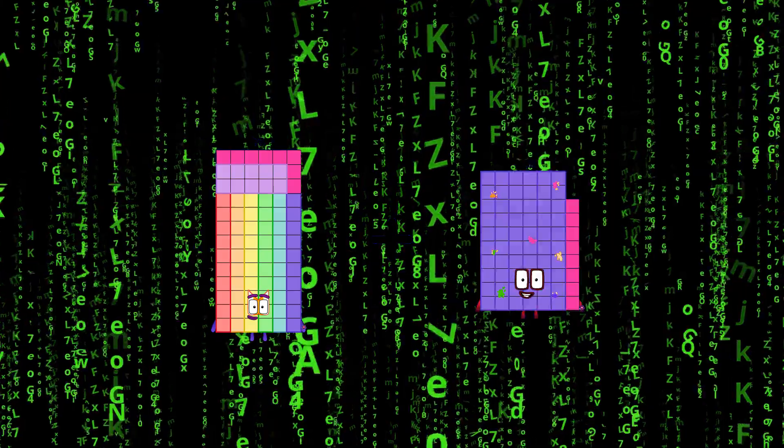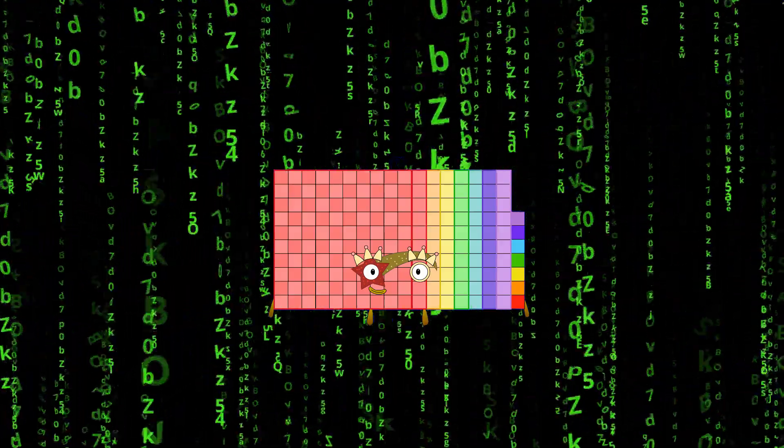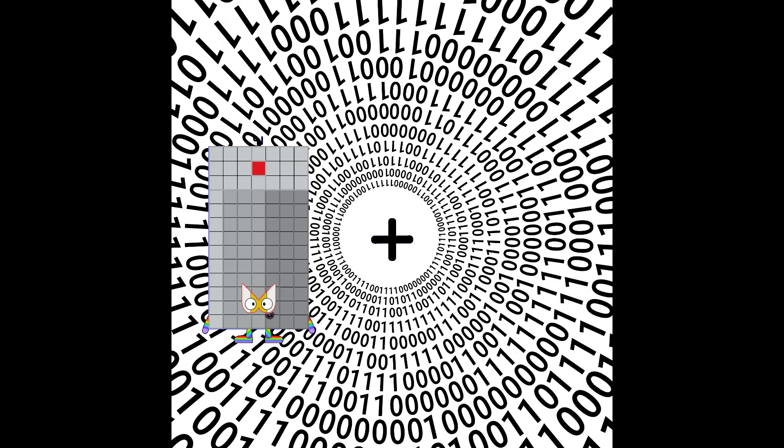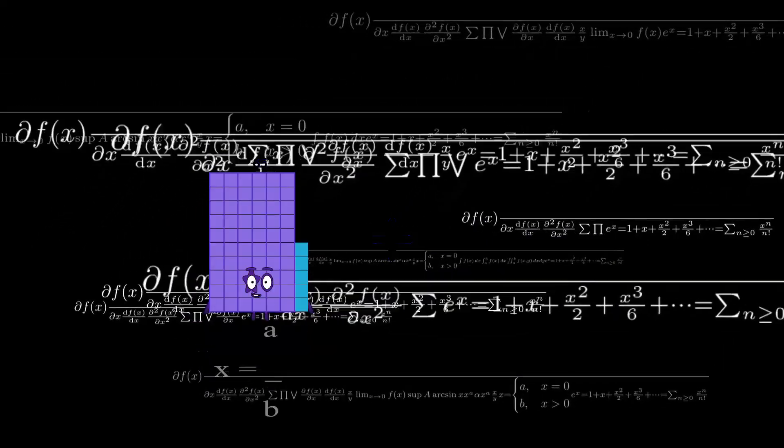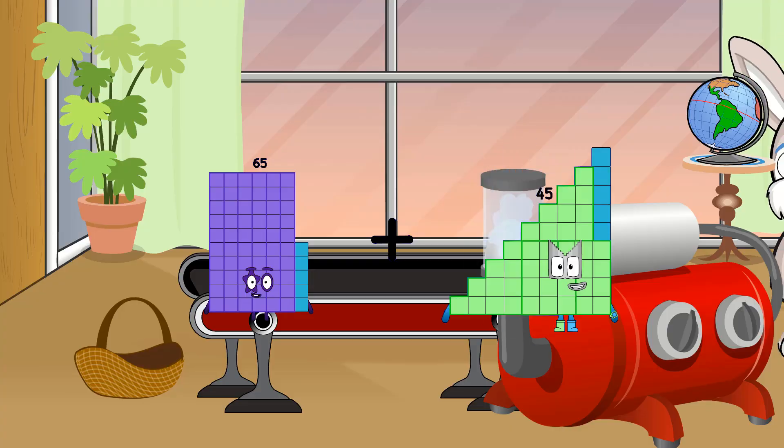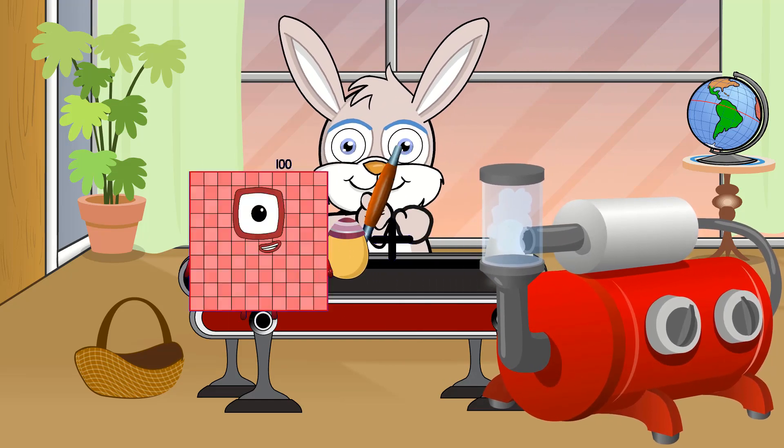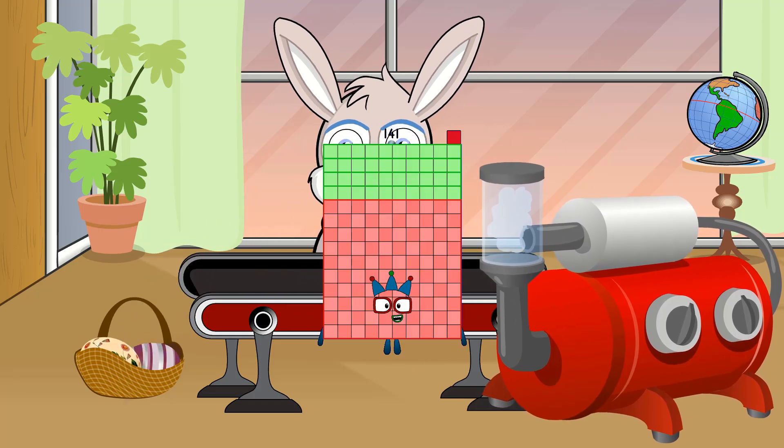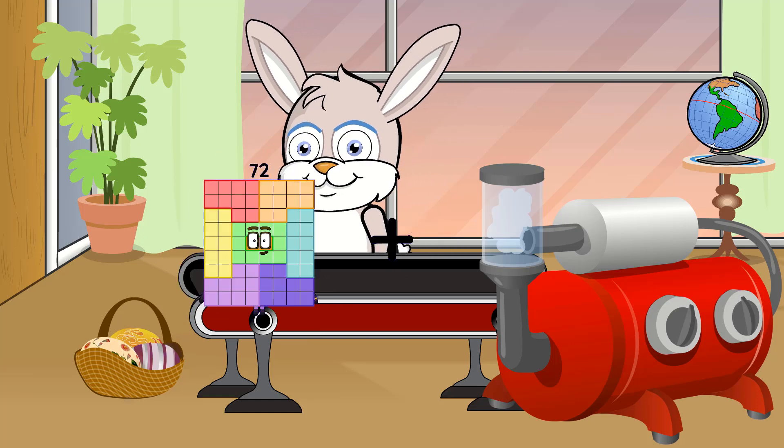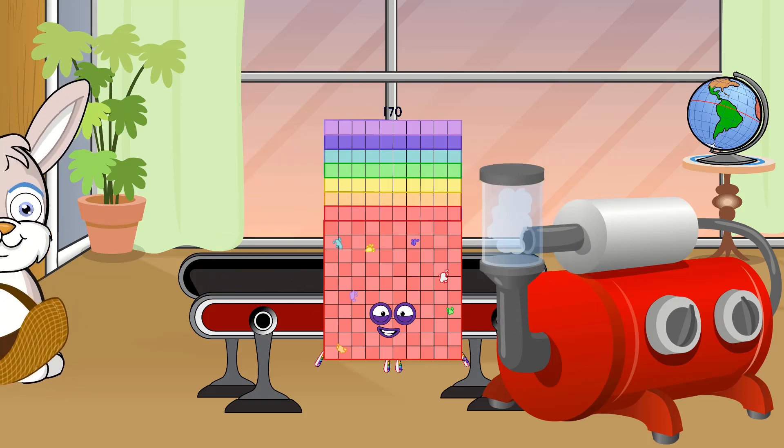78 plus 99 equals 177. 91 plus 37 equals 128. 65 plus 45 equals 110. 89 plus 52 equals 141. 75 plus 42 equals 117.